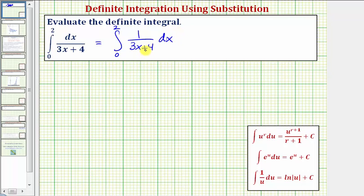Notice how this integral fits the form of the integral of one over u integrated with respect to u. But because our denominator is not just x here, when integrating with respect to x, we'll have to perform u substitution or use a change of variables. So we'll let our denominator of three x plus four be equal to u.